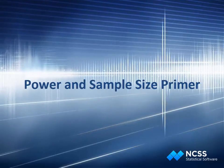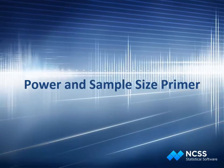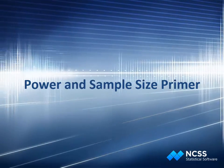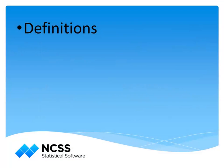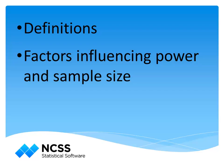This video is intended to be a basic introduction or primer to the principles of power and sample size estimation. It begins with definitions such as null and alternative hypotheses, test statistics, p-values, type 1 and type 2 errors, alpha, beta, and power. The factors influencing power and sample size are then discussed, including some of the intricacies of specifying the population parameters. The video concludes with an example that relates these definitions and sample size considerations to a real-world setting.